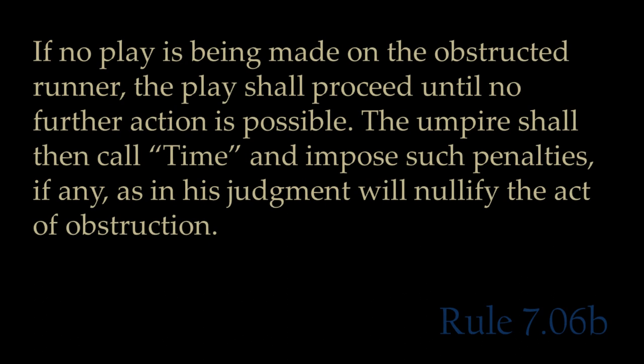So what does this change? Part B says that if no play is being made on the obstructed runner, the play shall proceed until no further action is possible. The umpires shall then call time and impose any such penalties, if any, as in their judgment will nullify the act of obstruction. The play did continue, as the umpires let it continue, and not as I originally said because there was just confusion. Obviously, the umpires decided that the proper penalty was to award Craig home plate.